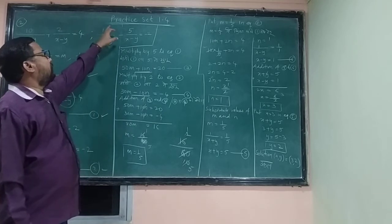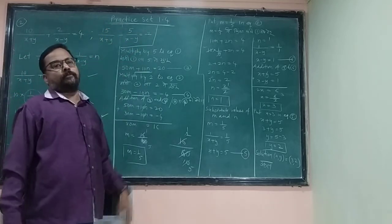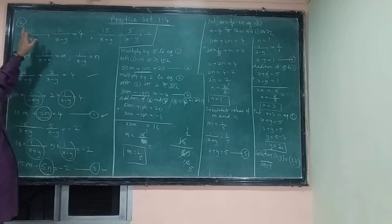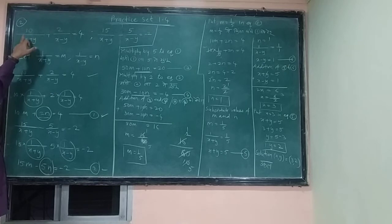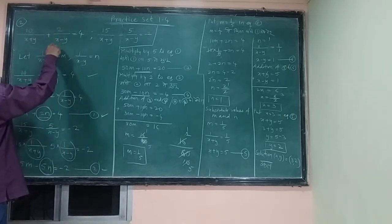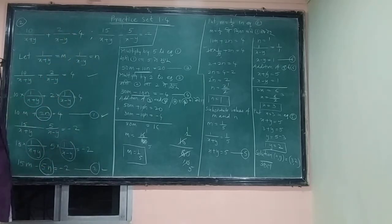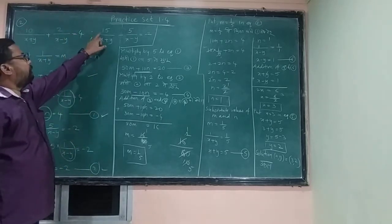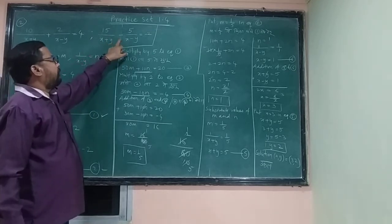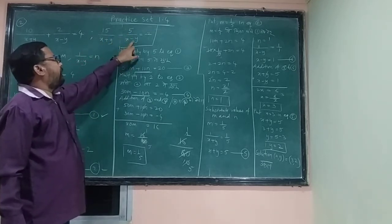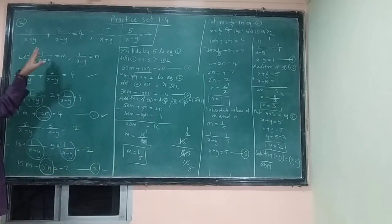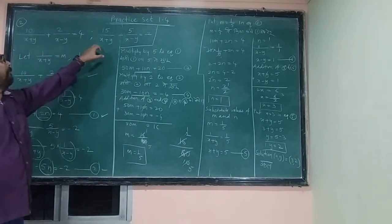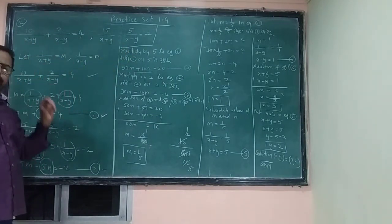Now we can learn Practice Set 1.4, Question Number 2. The given equations are: 10 upon (x + y) plus 2 upon (x - y) is equal to 4, and 15 upon (x + 1) minus 5 upon (x - 1) is equal to minus 2. You can see here the variables are given as denominators.